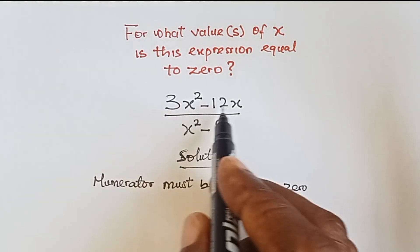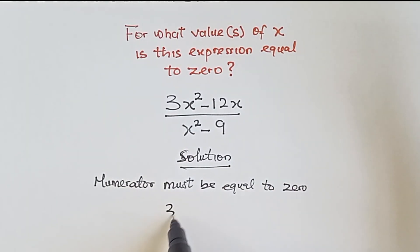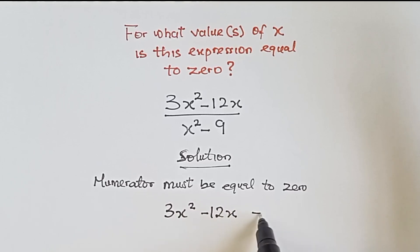Okay, and there was our numerator. Our numerator is 3x squared minus 12x. It must be equal to zero.